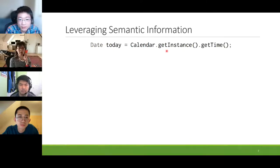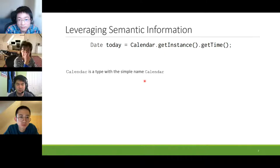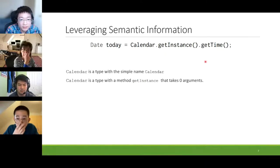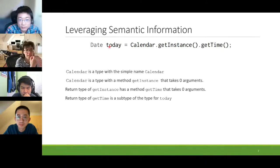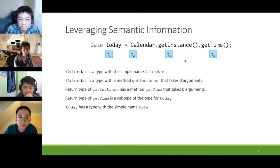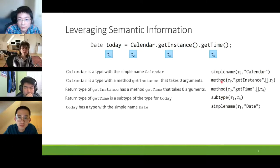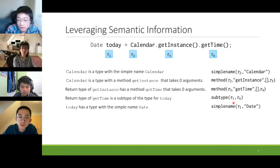For example, from the line 'Date today = Calendar.getInstance().getTime()', we know several things: Calendar is a type with simple name Calendar; it has a method getInstance that takes zero arguments and returns a type with a method getTime taking zero arguments; the return type of getTime is a subtype of the type of variable today; and today has a type with simple name Date. We annotate the AST with type variables and translate this knowledge into five constraints: for instance, tau2 has simple name Calendar, method getInstance with no arguments, return type tau3 has getTime method with subtype constraint where tau4 is a subtype of tau1.